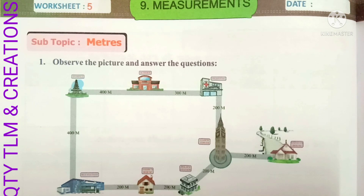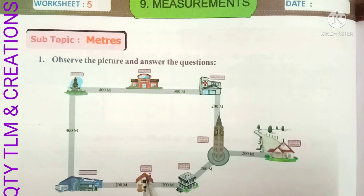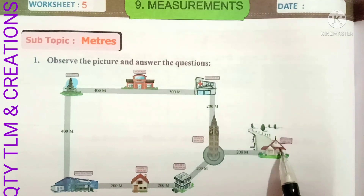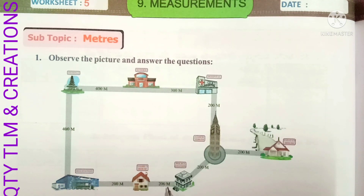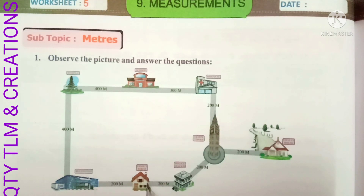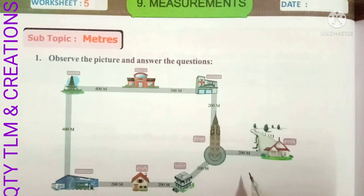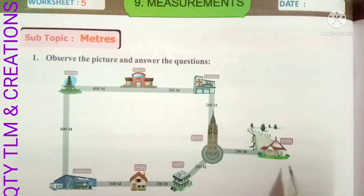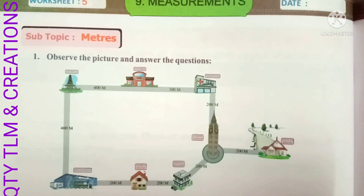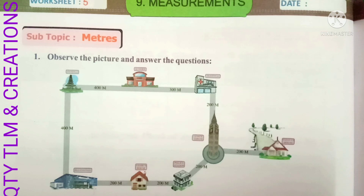First question: whose house is nearer to school, Yeshu's house or Vijaya's house? This is Yeshu's house and this one is Vijaya's house. Yeshu's house is 900 meters from school and Vijaya's house is 700 meters, so Vijaya's house is nearer to school.